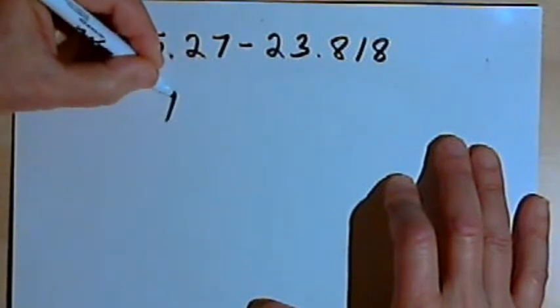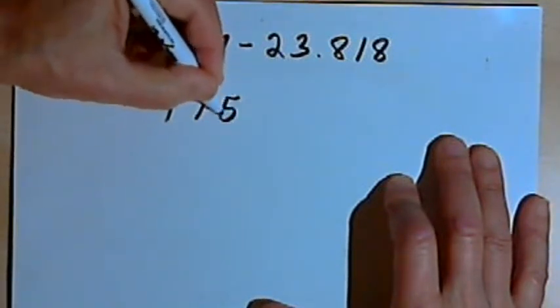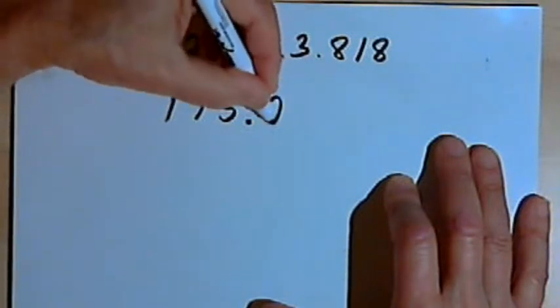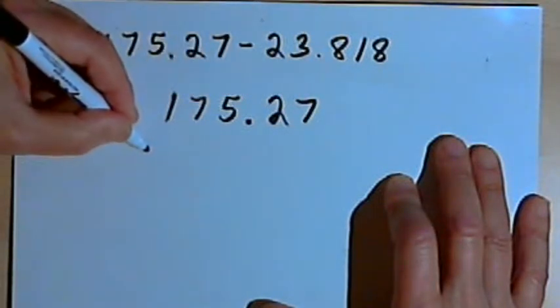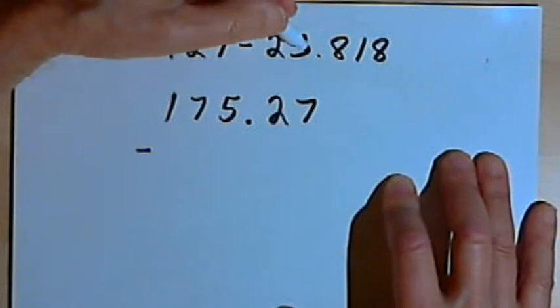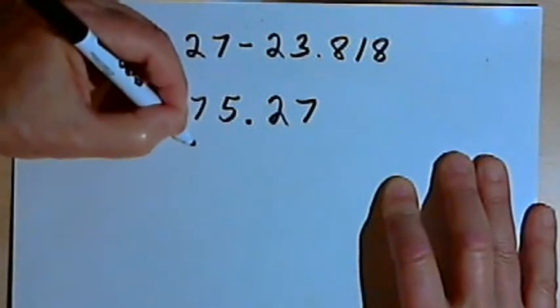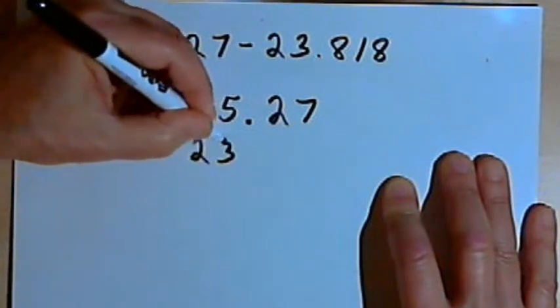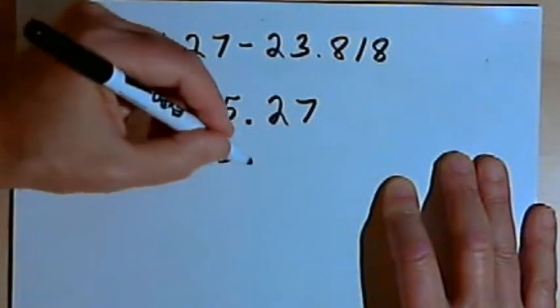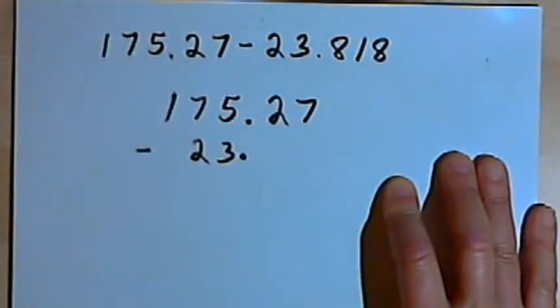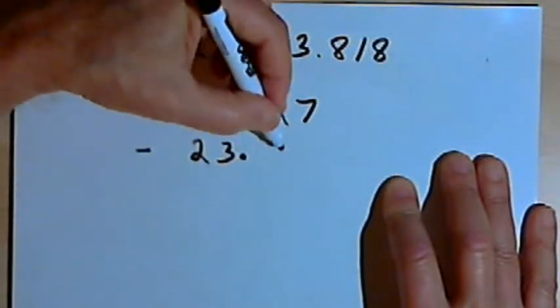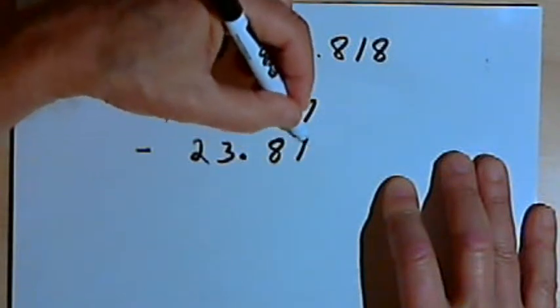So I'll start with the 175.27 and I'm subtracting 23.818. I'll write the 23 underneath the 75, then my decimal points will line up one under the other, and then I'll add in the 23.818.